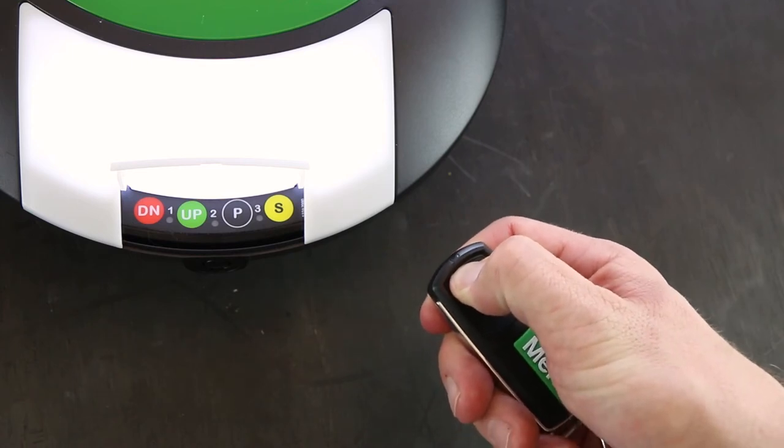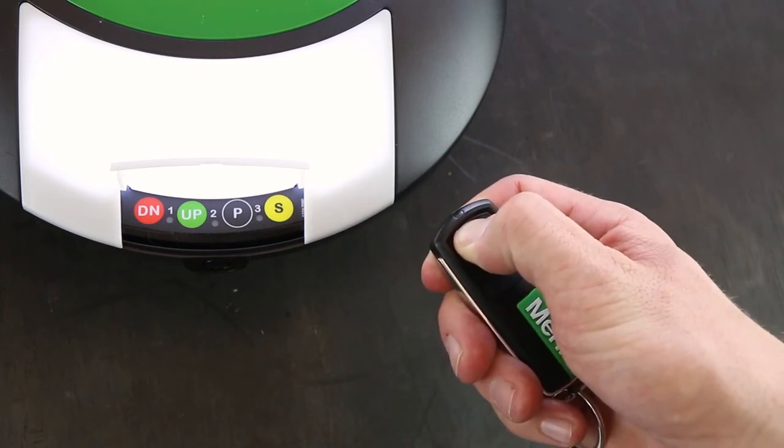Press and hold the button on the remote that you wish to use. The LED indicator on the remote will flash continuously.